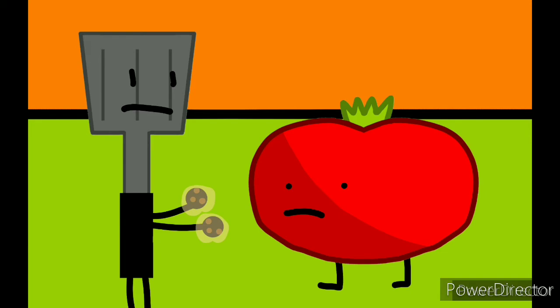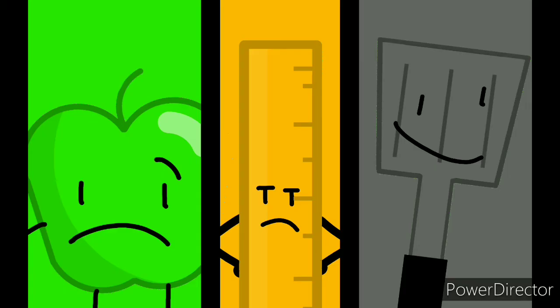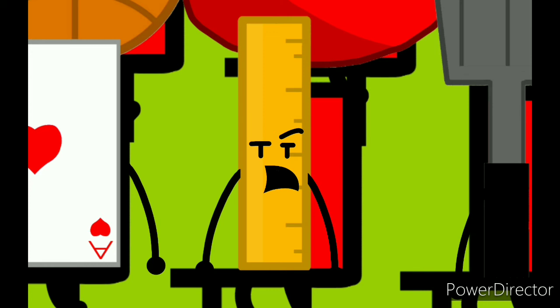Tomato? So that brings us to the bottom three. Apple, Ruler, and Spatula. Of course. First time up for elimination, and I'm already in the bottom three.